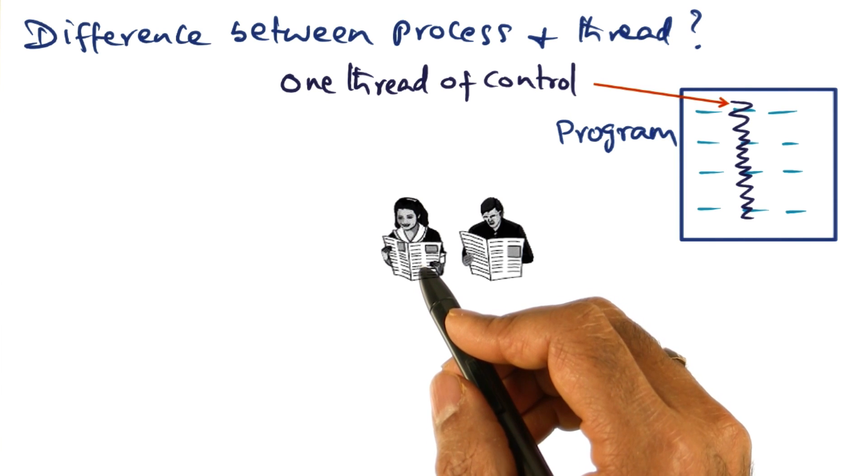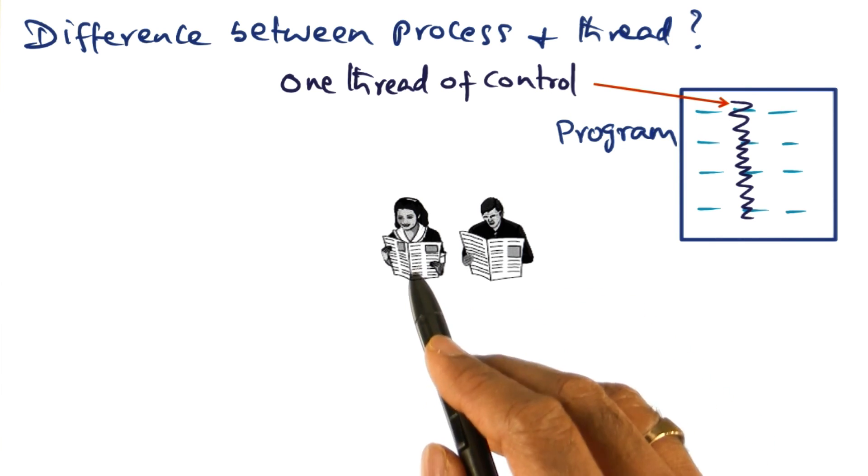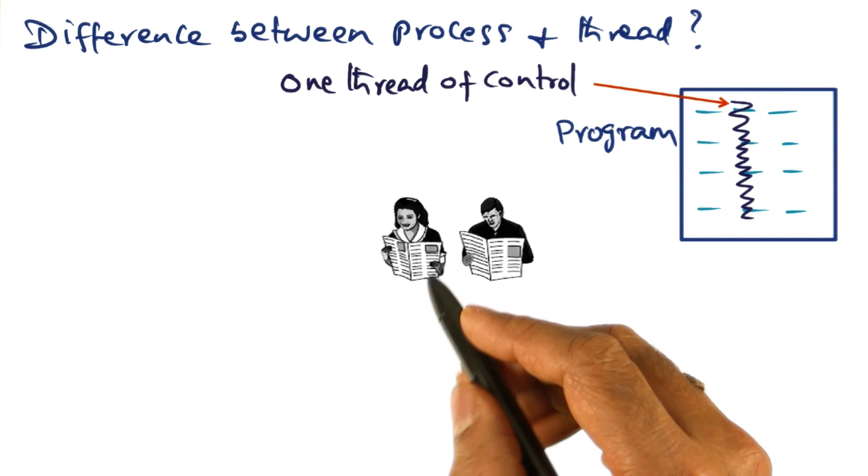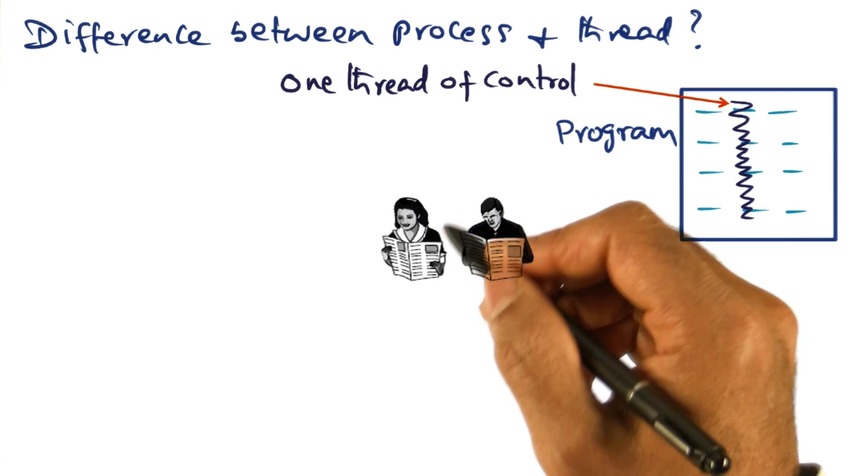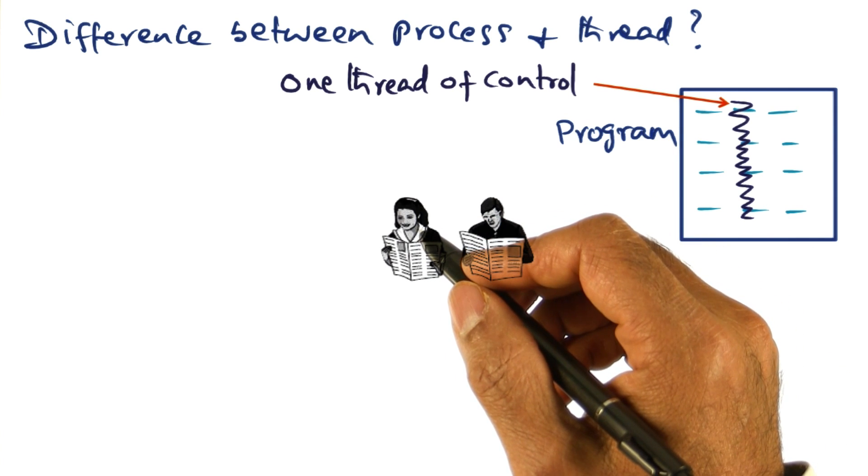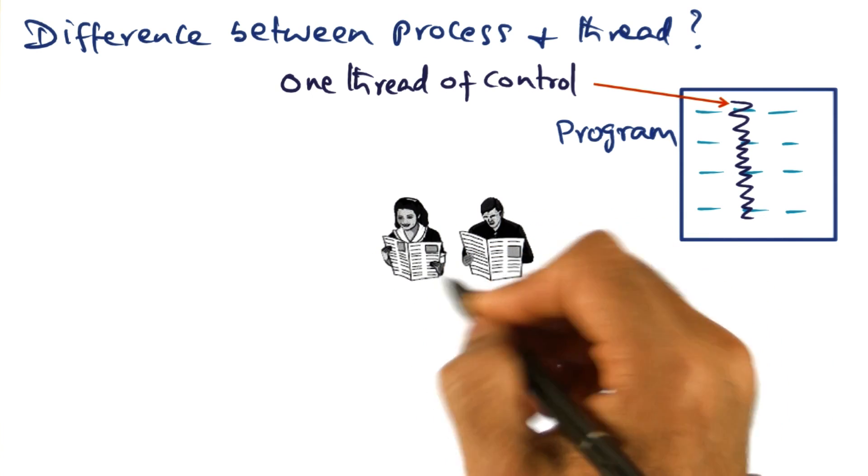Now, my wife comes along, and being the more responsible one in the family, picks up the business section and starts reading it. That's perfectly fine. Depending on our interest, I'm reading the sports section, my wife is reading the business section, each is reading a different section of the same newspaper.